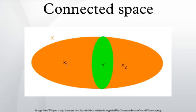All continuous functions from X to {0, 1} are constant, where {0, 1} is the two-point space endowed with a discrete topology.